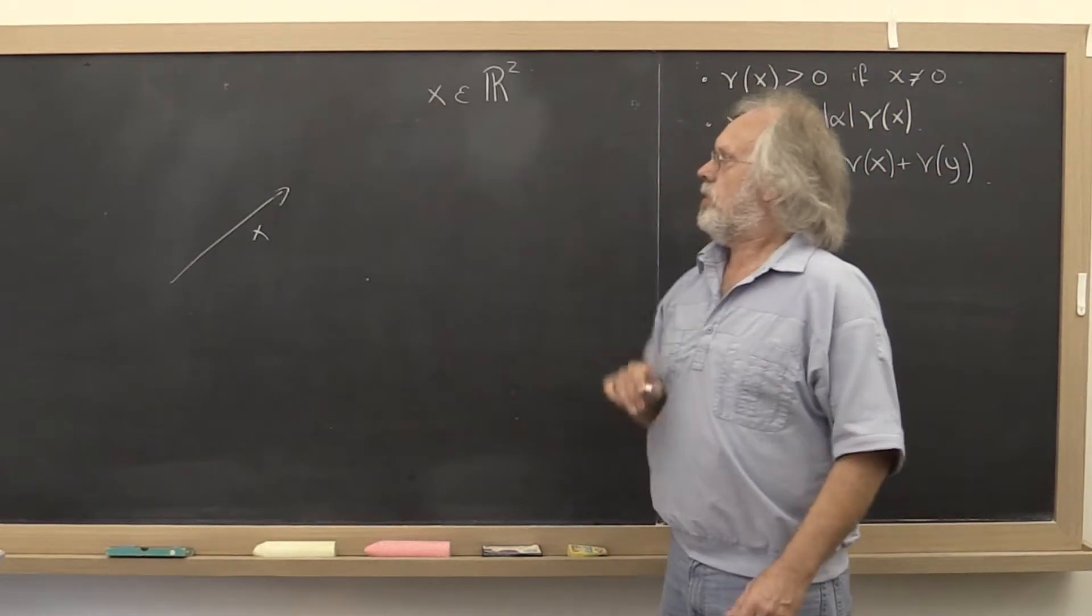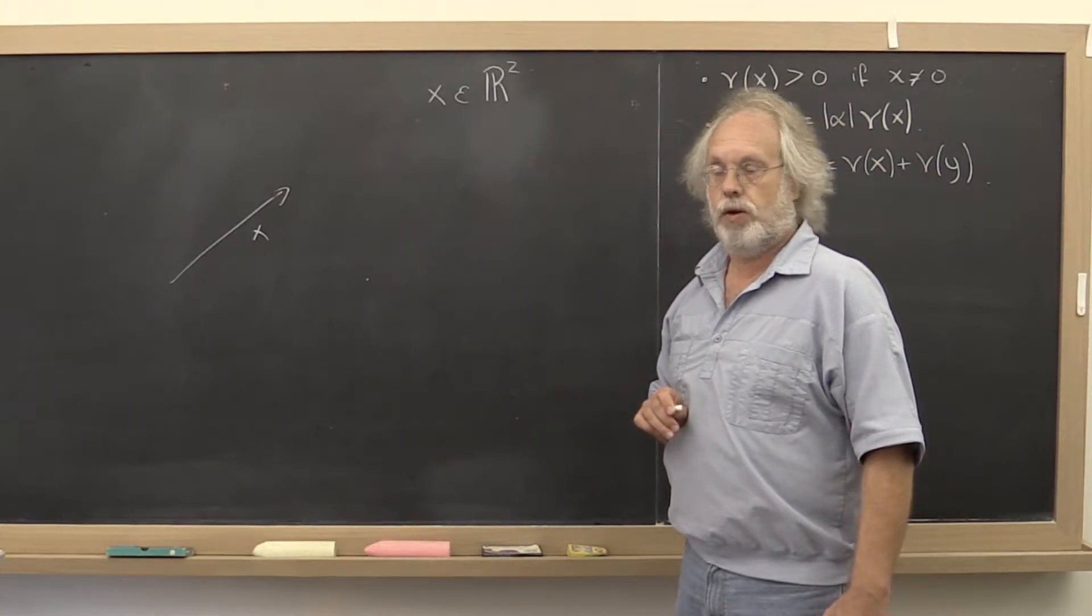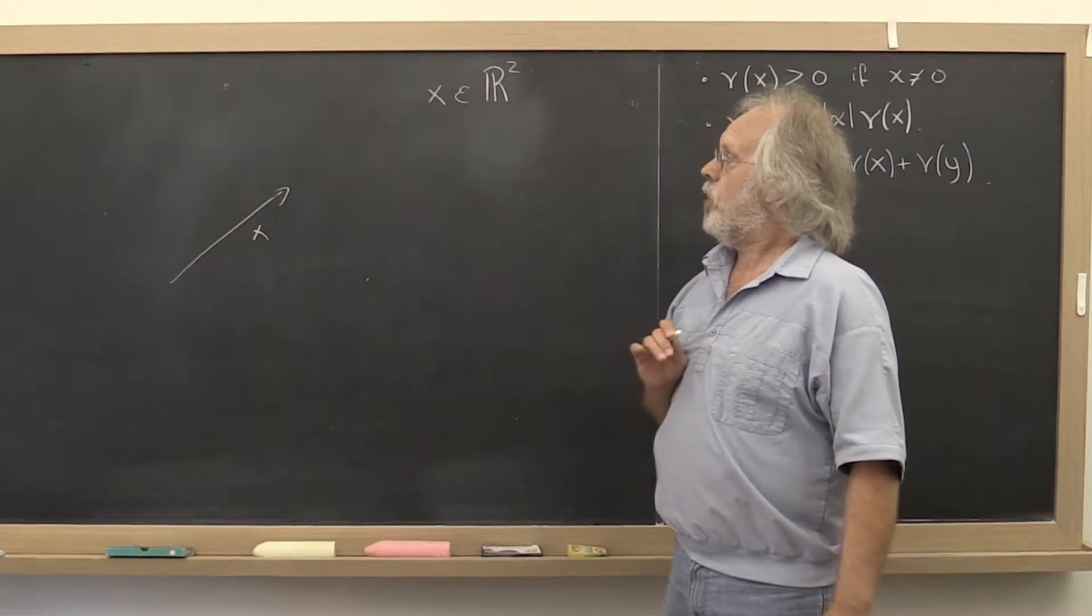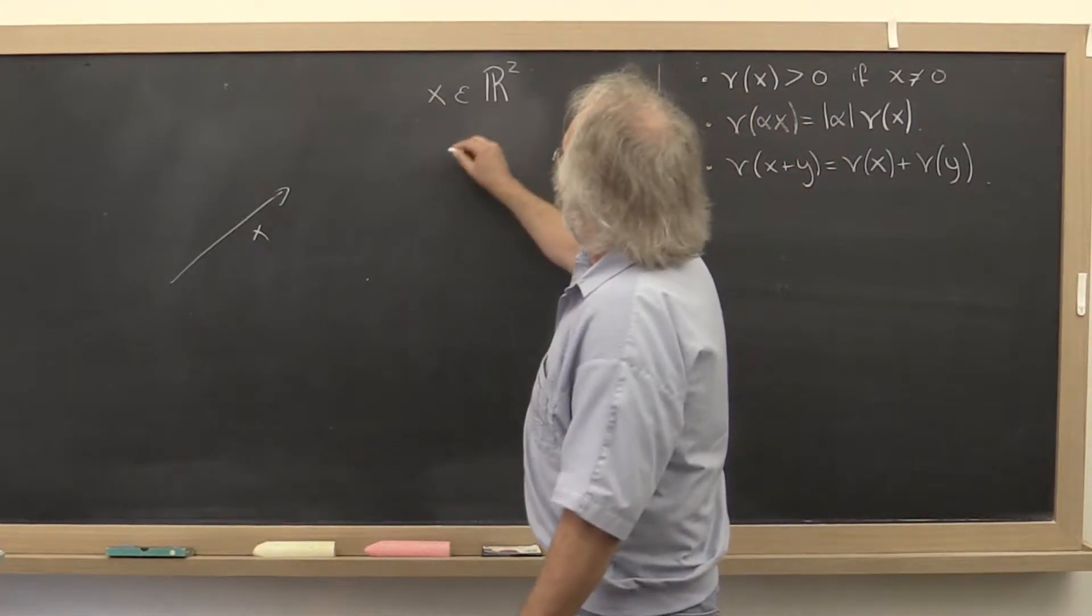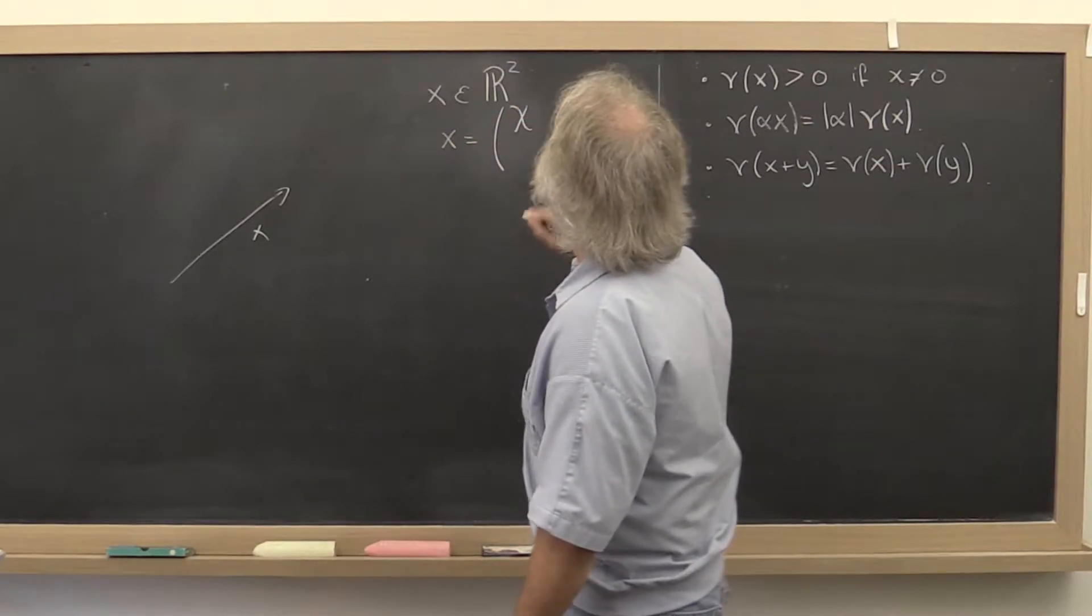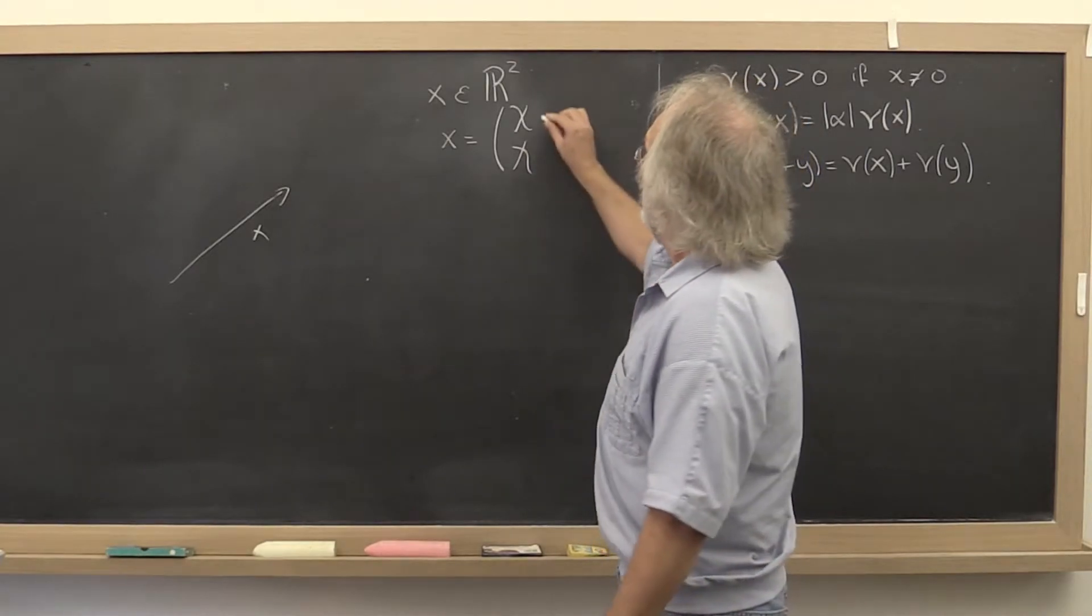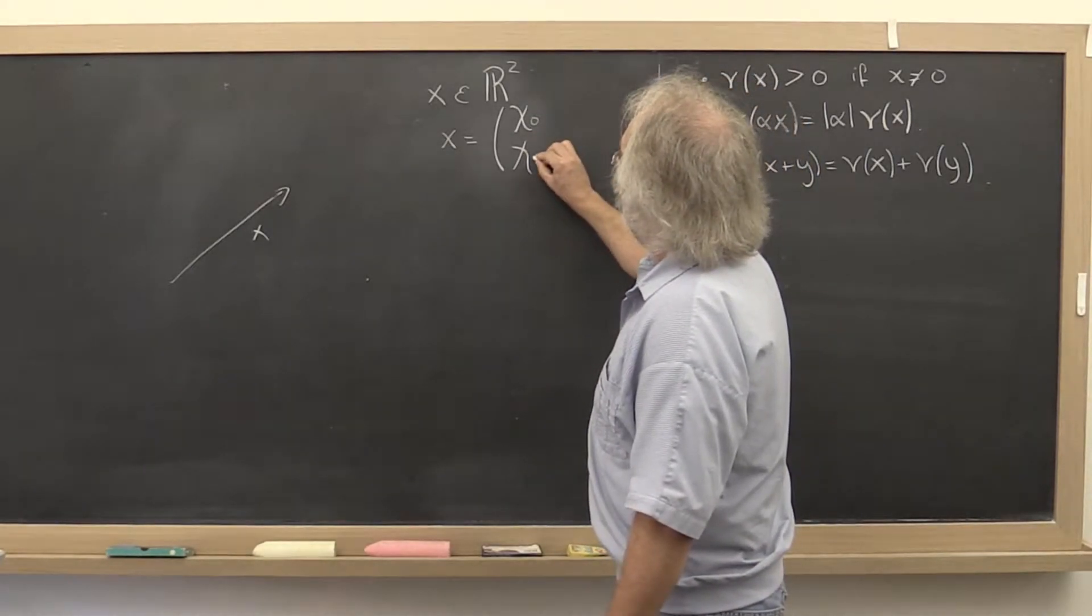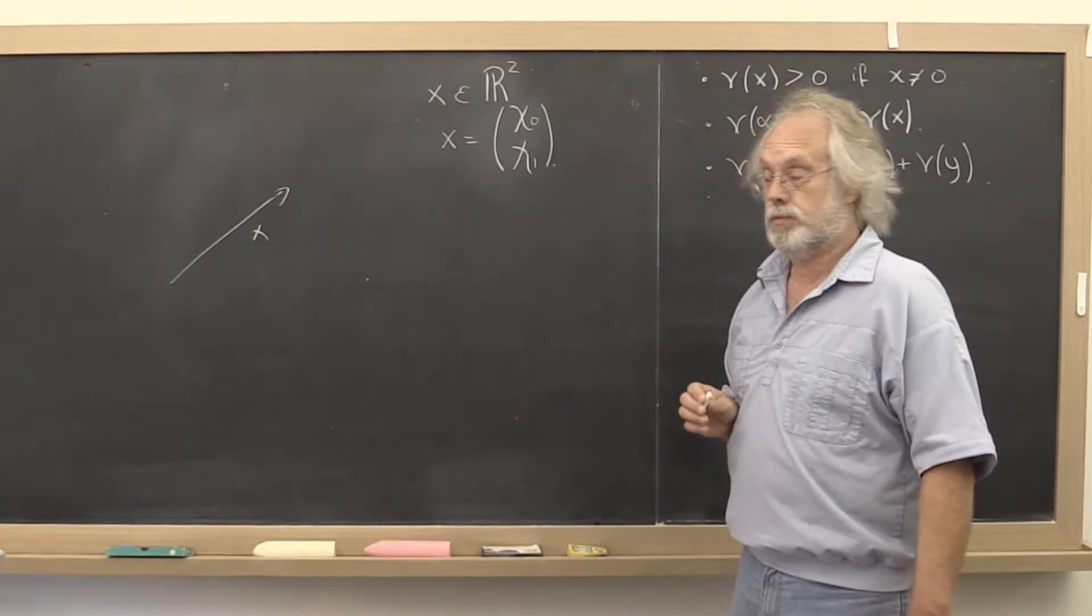We like to use Roman lowercase letters to denote vectors. So anytime you see a Roman lowercase letter, think vector. This vector here has two components. And since we use lowercase Greek letters for scalars, we're going to denote those components by χ₀ and χ₁.